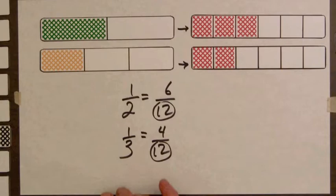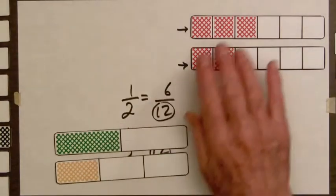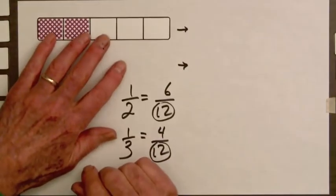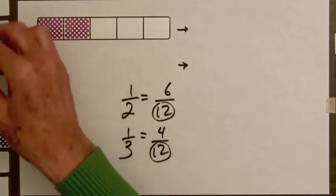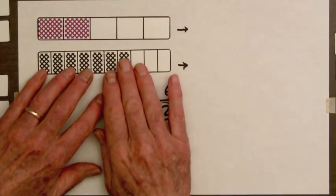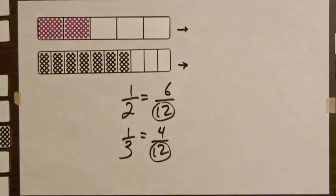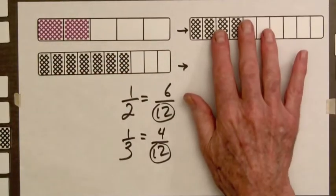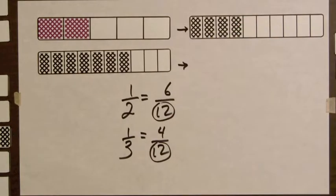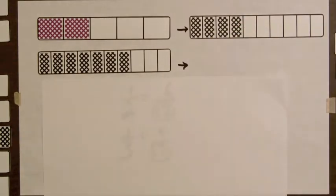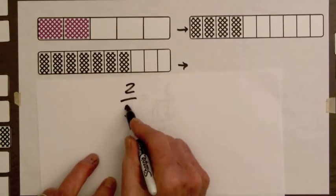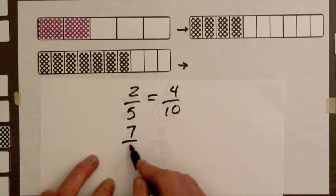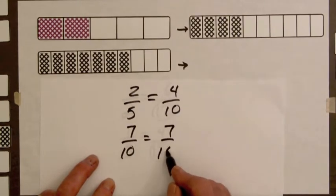Let's look at one more example of common denominators using the bars. We will begin with a two-fifths bar and seven-tenths bar. These bars have parts of different sizes. We will replace the two-fifths bar by a four-tenths bar, and we will write the equations: two-fifths equals four-tenths, and seven-tenths equals seven-tenths.